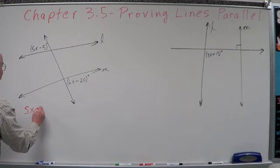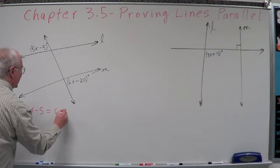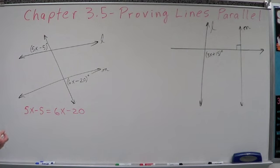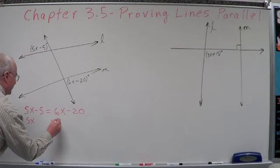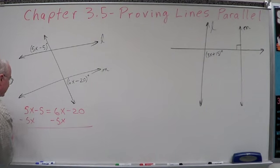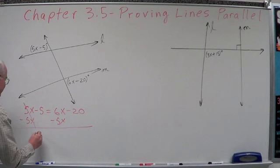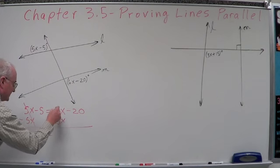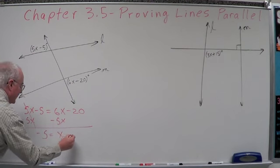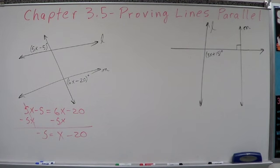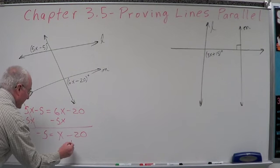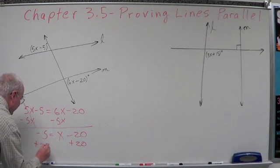So we have 5X minus 5 equals 6X minus 20. I want to get my little X over to my big X, so we're going to subtract 5X from both sides. We're left with negative 5 equals 6X minus 5X, which is going to be X minus 20. I want that X by itself, so to get it by itself, we're going to add 20 to both sides.